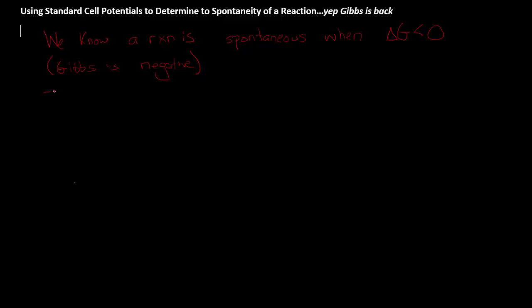Will it give us energy that we can use to do work? We know that when delta G, Gibbs free energy, is less than zero, when G is negative, a reaction is shown to be spontaneous.